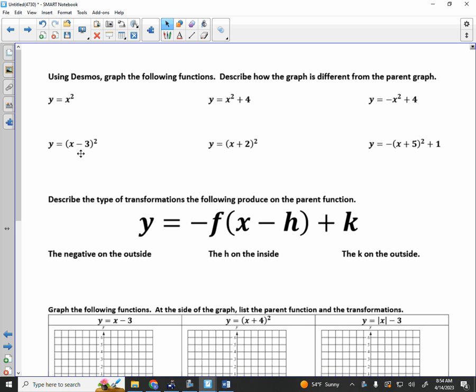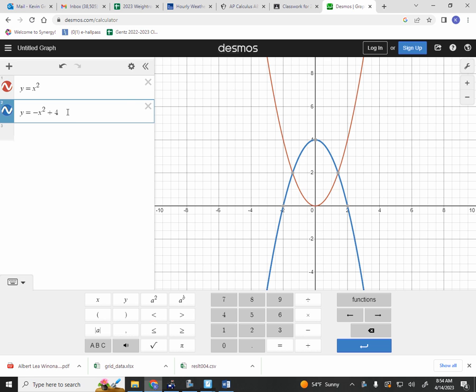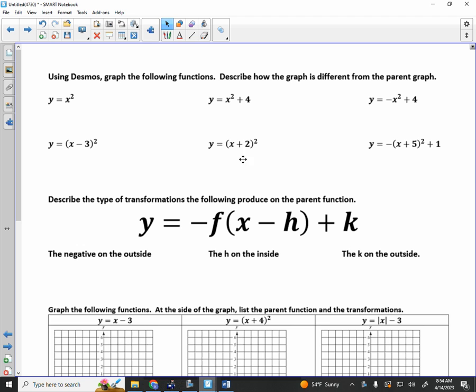The next one says x minus 3 quantity squared. I'm going to type that in, parentheses, x minus 3, parentheses, quantity squared. How is that one different? We got right 3. Underneath the minus 3 squared, write down the words right 3. Doesn't that seem weird? If it's a minus 3, doesn't it seem like it should be left 3? But it's opposite of what you think when it's on the inside.